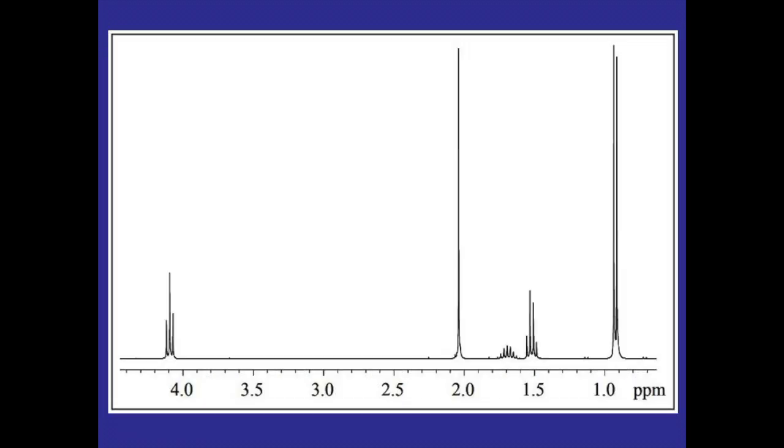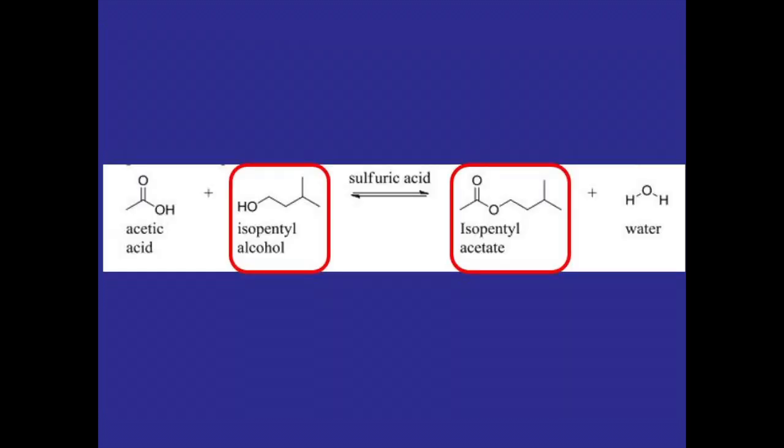We can see here that there are five unique peaks, meaning it would have to be for one of these two compounds because acetic acid doesn't have enough unique hydrogens to produce that many peaks.